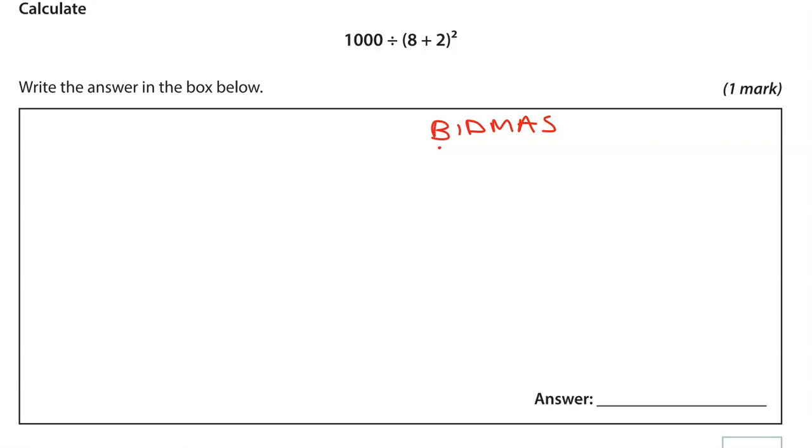So what does this mean? I'll rewrite it here as it is. Now focusing on the brackets: 1,000 divided by, within the brackets we have 8 plus 2, which is 10, and then we have that squared. So we've done the brackets.